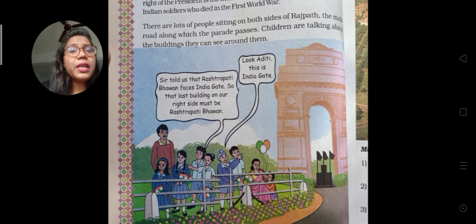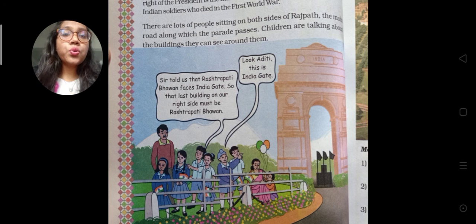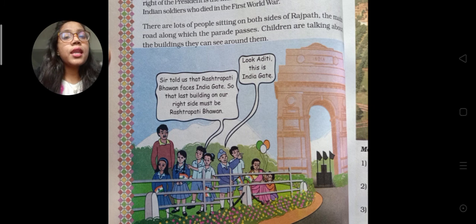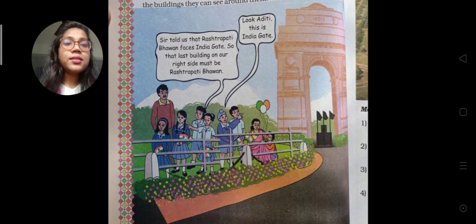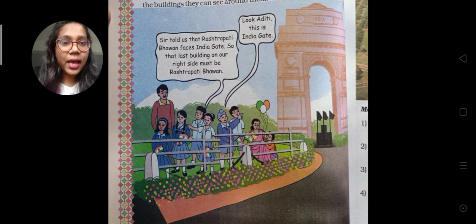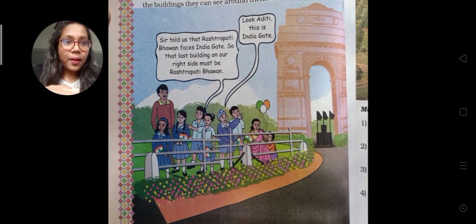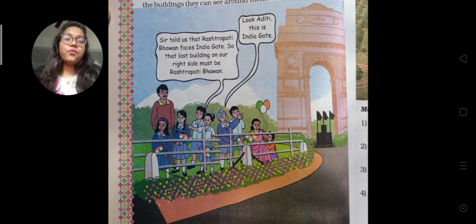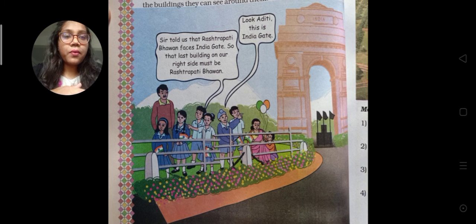The children are talking about the buildings they can see around them — not just India Gate, but many other buildings on either side. It is noted that Rashtrapati Bhavan faces India Gate, meaning Rashtrapati Bhavan is exactly opposite India Gate. So the last building on the right side must be Rashtrapati Bhavan.